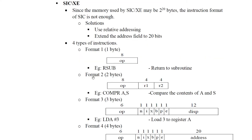In SIC-XE there are 4 formats: format 1, 2, 3, and 4. Format 1 is 1 byte in size and contains only the opcode of 8 bits; example instruction is CLEAR. Format 2 is 2 bytes in size. In this format, the first 8 bits are the opcode, then R1 corresponding to 4 bits and R2 corresponding to 4 bits. R1 and R2 represent two registers; for example, the instruction COMPR A, S uses two registers.